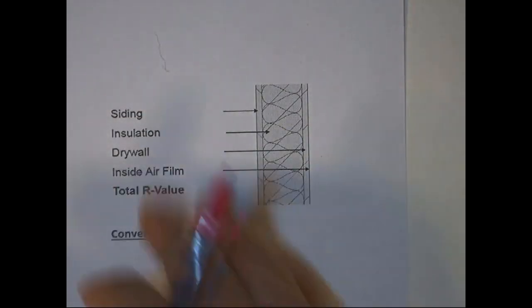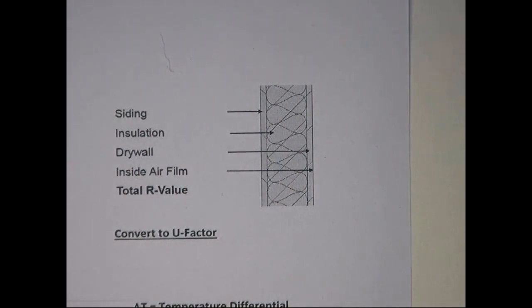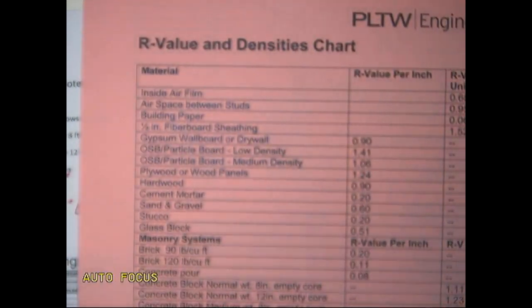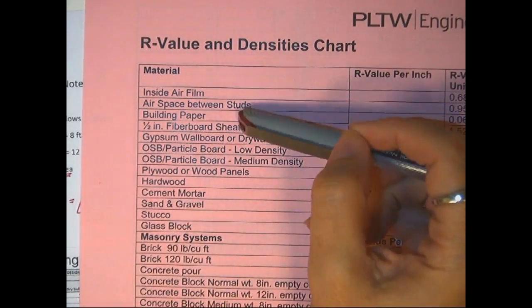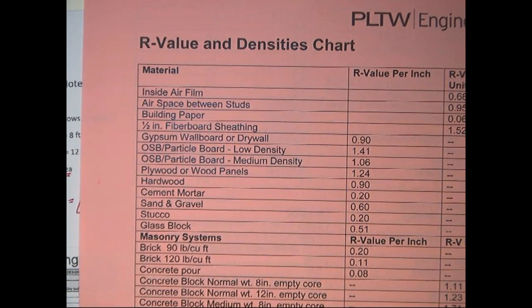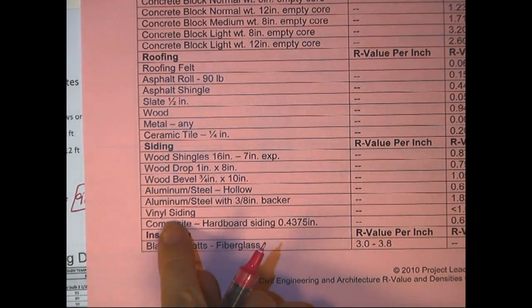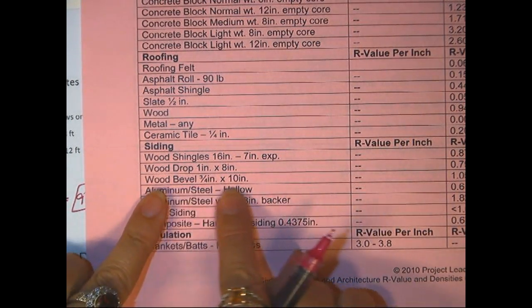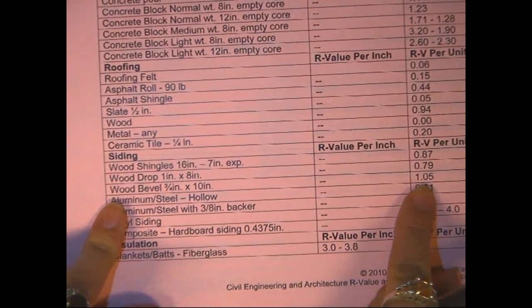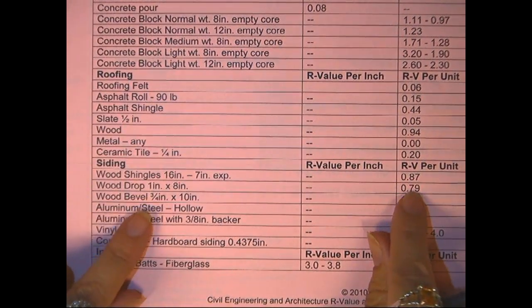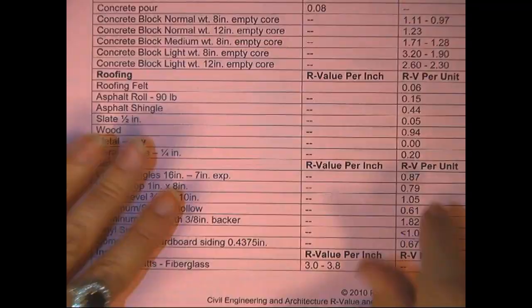So what you do is you look at each section of your wall here, and you're going to look it up on your pink chart. So siding, I'm going to zoom out so we can see our chart. You come over here, and we go down this side until we've found siding. And we're looking for, here happens to be vinyl siding, and they've actually given us several kinds here. The kind that we're using is this wood bevel. It's going to be 1.05. So you look across, and you find 1.05. This is in the column per unit, so the siding itself, this kind of siding, 1.05. So we're going to write that down.